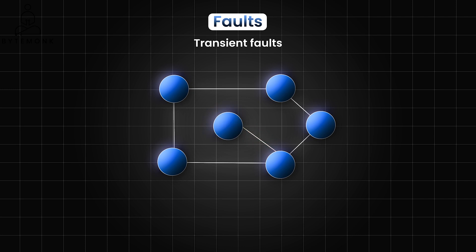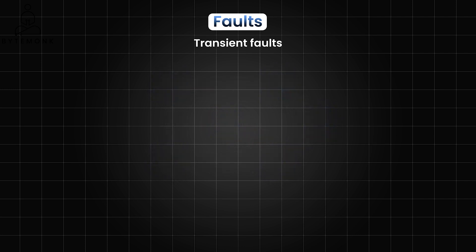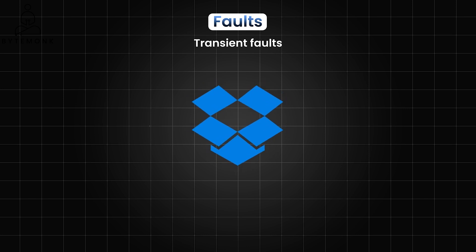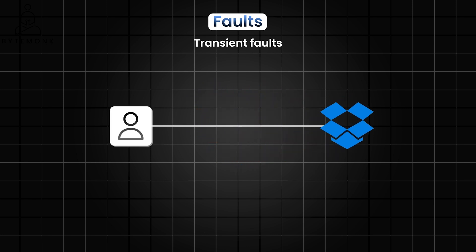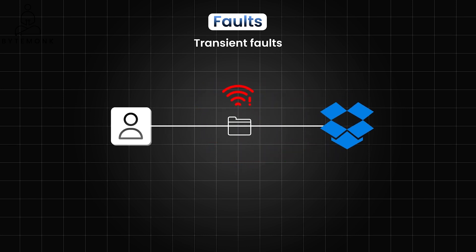For example, imagine a cloud-based file storage service like Dropbox. A user attempts to upload a photo, but a momentary network congestion causes the initial upload to fail. With the retry pattern in place, the application would automatically reattempt the upload, potentially succeeding once the network stabilizes.